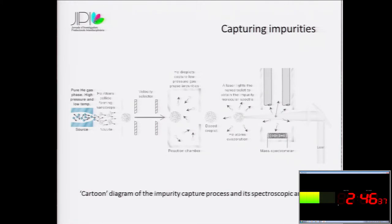After a free expansion, the helium atoms collide between them and form the helium droplets. Then a velocity selector filters the droplet that will reach to the reaction chamber, the place where the capture of the impurities take place. And after that, we have the doped droplet.